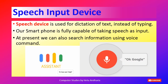The next input device is the Speech Input Device. A speech input device is used for dictation of text instead of typing. In our mobile phones we have a small mic through which we can type by speaking, and in OK Google or Google Assistant you can give voice commands. Our smartphones are fully capable of taking speech as input, and we can also search information using voice commands.